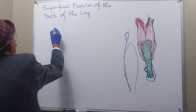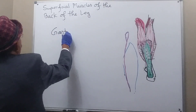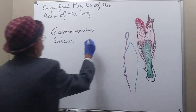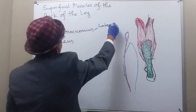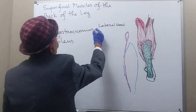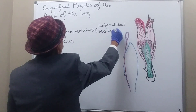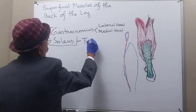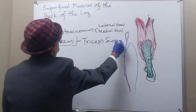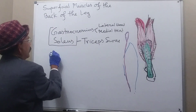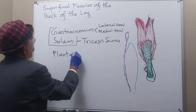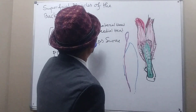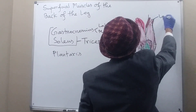The gastrocnemius has two heads: one is the lateral head and another is the medial head. Together, gastrocnemius and soleus are called triceps surae. The superficial muscles also include the plantaris, which is vestigial and may be absent in around 10% of the population.